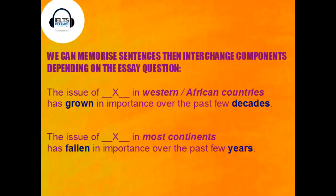So if we've got that sentence, how could we adapt it to a different type of essay? The basic structure is: 'The issue of [topic] in [place] has grown in importance over the past few decades.' One alternative would be: 'The issue of technology in most continents has fallen in importance over the past few years.' Can you see how we've changed 'decades' to 'years', and 'grown' to 'fallen'? We've basically kept the same structure.